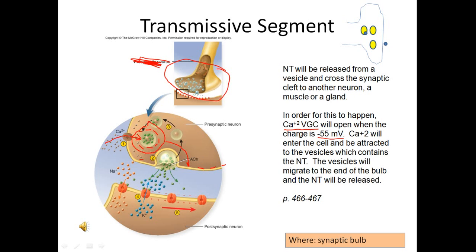To recap: when we hit negative 55, the calcium voltage-gated channels open, calcium enters, it's attracted to the negatively charged vesicles, the vesicles migrate to the end of the synaptic knob, and the neurotransmitters are exocytosed from the vesicles.